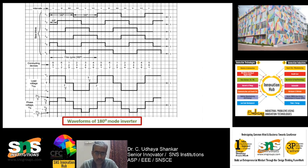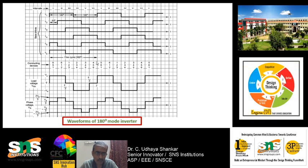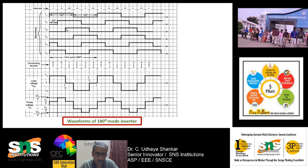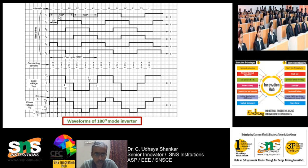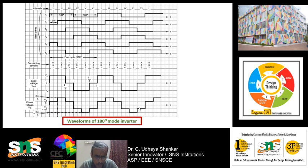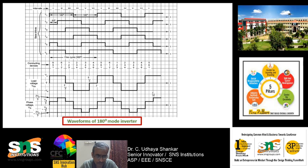If you plot the waveform, you can see the switching waveform at the top. T1 is switched on for 180 degrees. T2 gets switched on after 60 degrees, T3 after another 60 degrees, T4 after another 60 degrees, T5 similarly — each device has a 60-degree interval. T1 and T4 are 180 degrees out of conduction with each other: T1 is for the positive cycle whereas T4 is for the negative cycle. If you plot the output voltage, you get a quasi-square waveform for the line voltage, whereas for the phase voltage you get a stepped waveform.